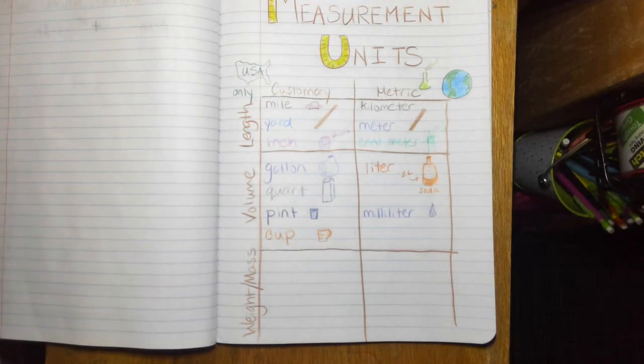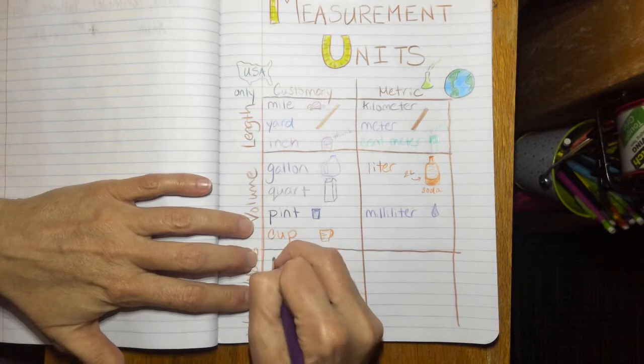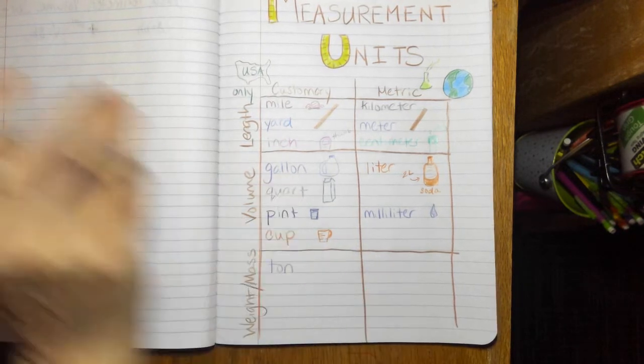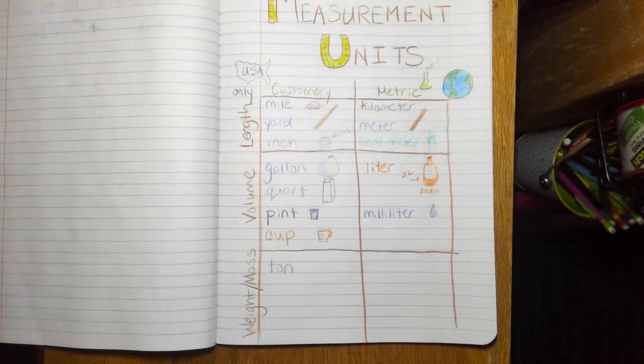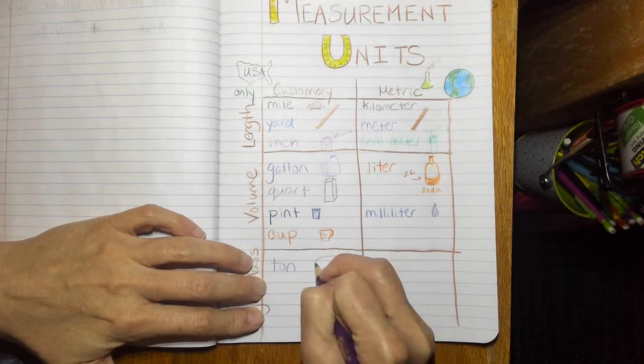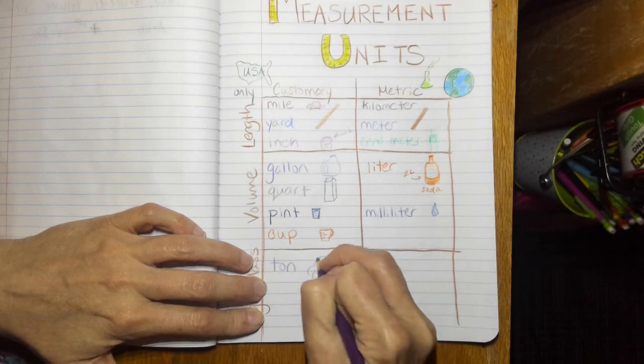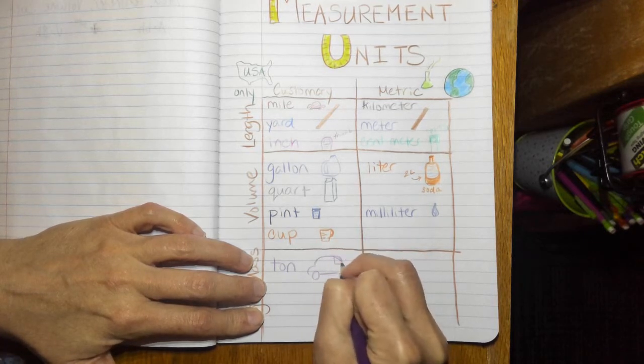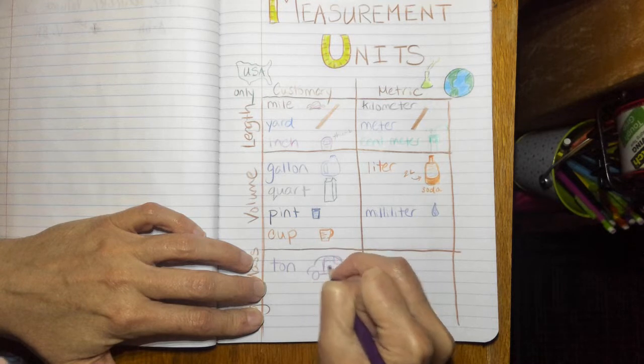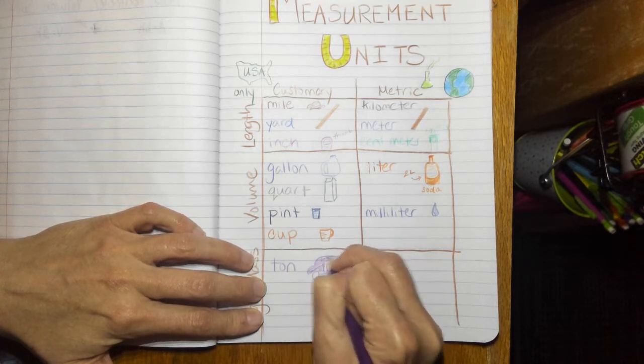So on the customary side we have a ton. So like a ton would be, you know those slug bug cars, like they're really small. One of those would be about a ton. So a Volkswagen Beetle.